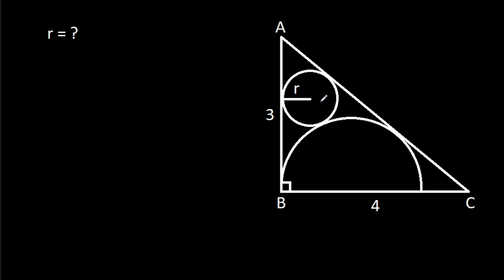In this video, we have been given a circle and a semicircle inside a right-angle triangle, where AB is 3 and BC is 4.